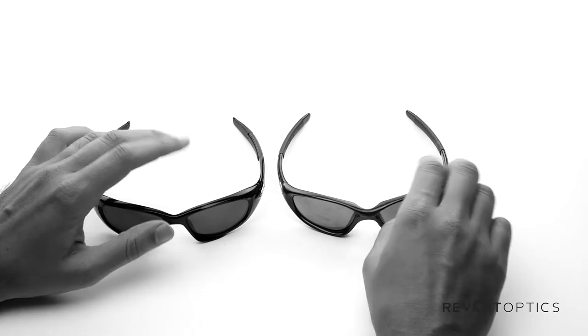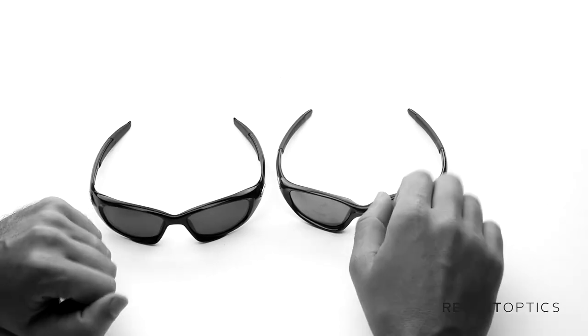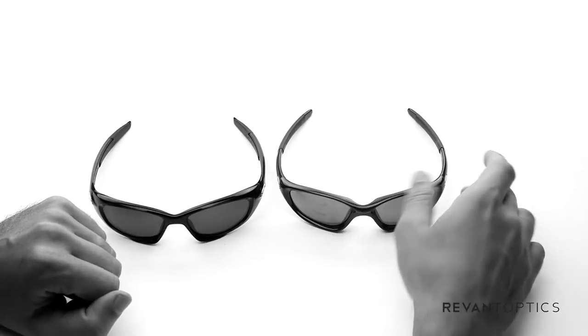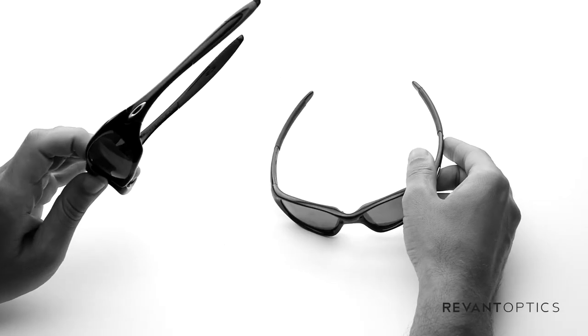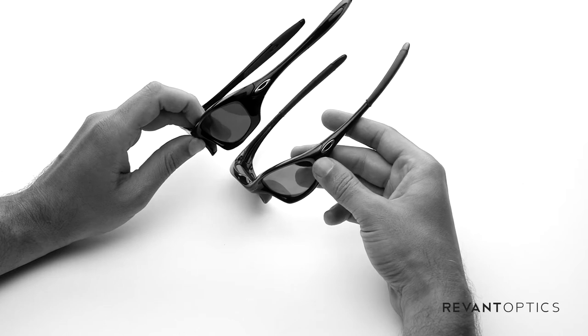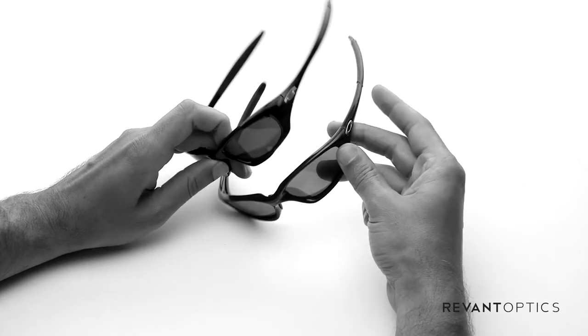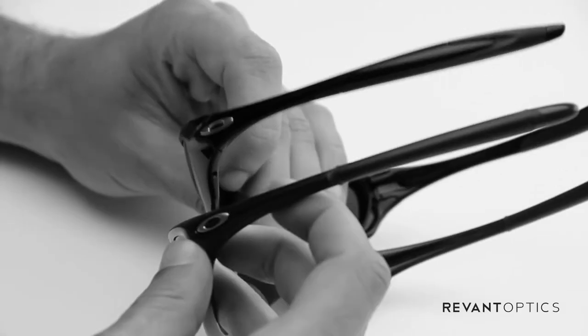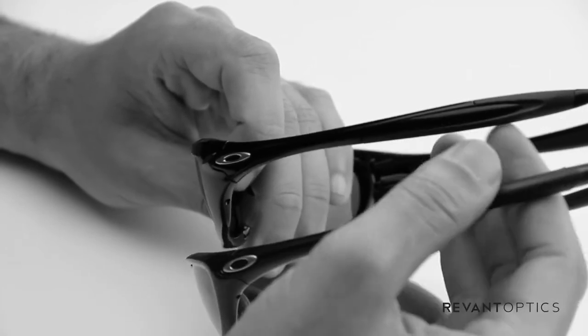I just want to show you some ways to identify which frame you have. Some of the easier ways to identify is with the temple. The temple itself looks relatively similar. You can see there's some differences in the contour.